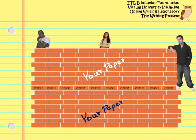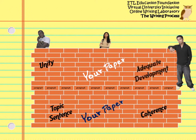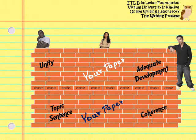These elements include unity, coherence, a topic sentence, and adequate development. But before we talk about these elements, let's first review some basics about the building block of a paragraph — the sentence.